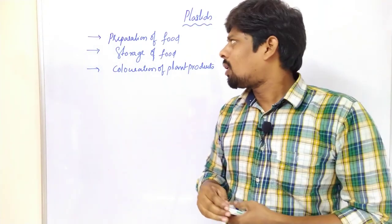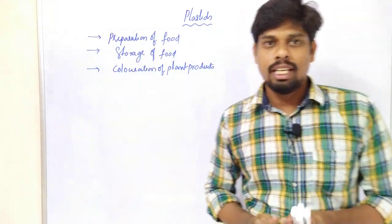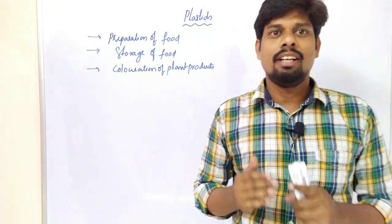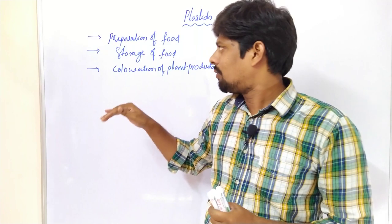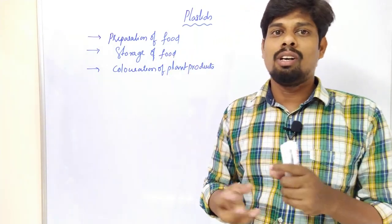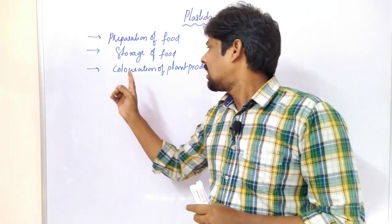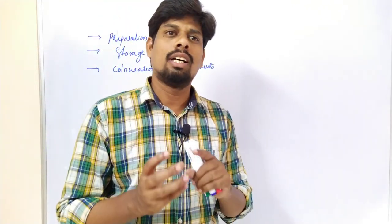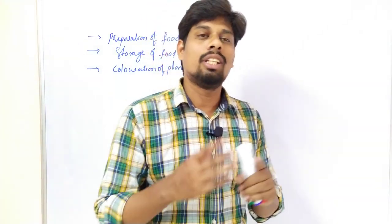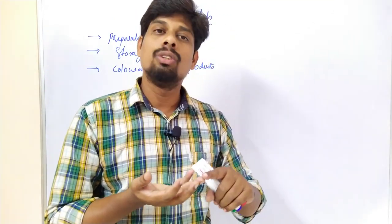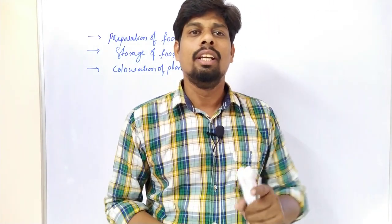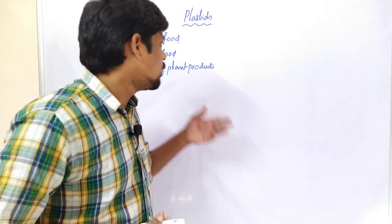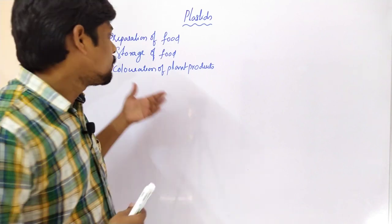The Plastids involved in photosynthesis result in the preparation of food. After preparation, these Plastids store the prepared food in the form of tubers and so on. Regarding coloration, plant products like fruits and flowers show different colorations — blue, green, red, orange — and flowers also show many colors. All these colors are due to the presence of Plastids.